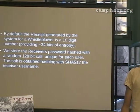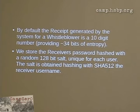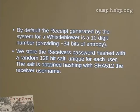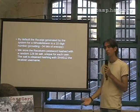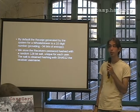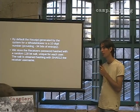When the whistleblower has uploaded material they get a receipt number which they can insert later when they come back and leave a message for the journalist. And it stores the receiver's password hash with a random 128-bit salt, unique for each user. The salt is obtained by hashing with SHA-512 on the receiver's username. Maybe that's not really bad, but I would say to use Whirlpool, which is a bit slower to crack, or scrypt. I would actually go with scrypt.